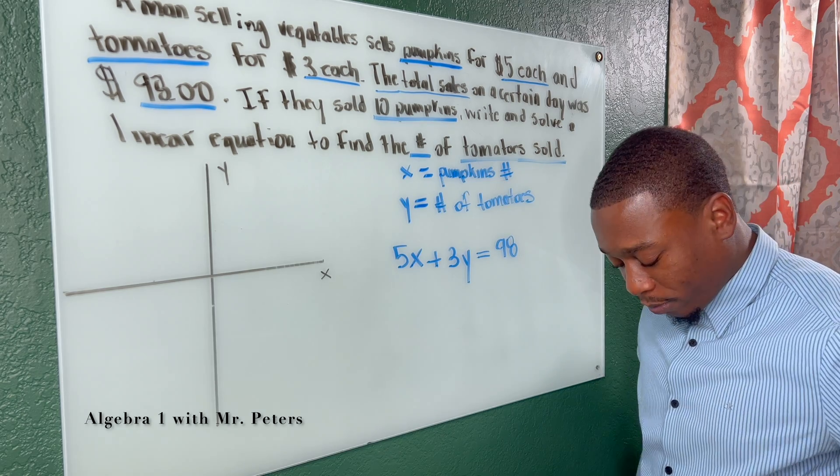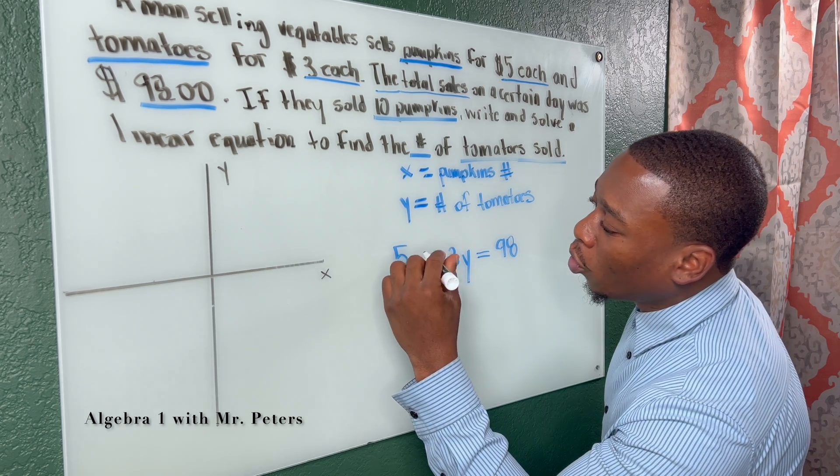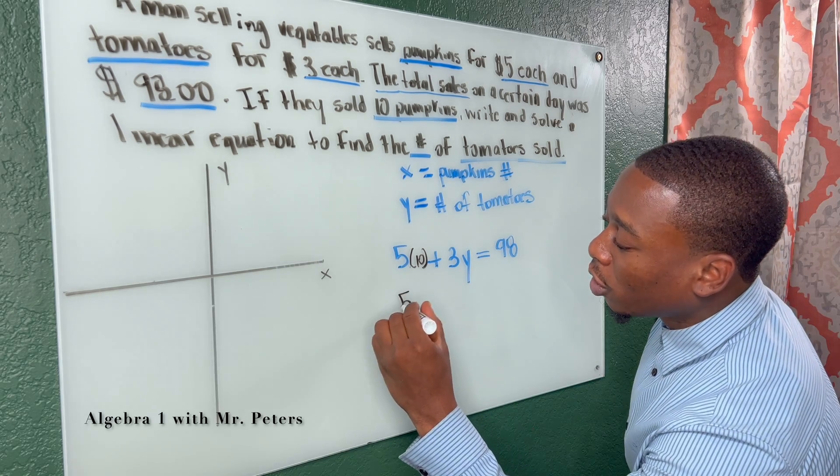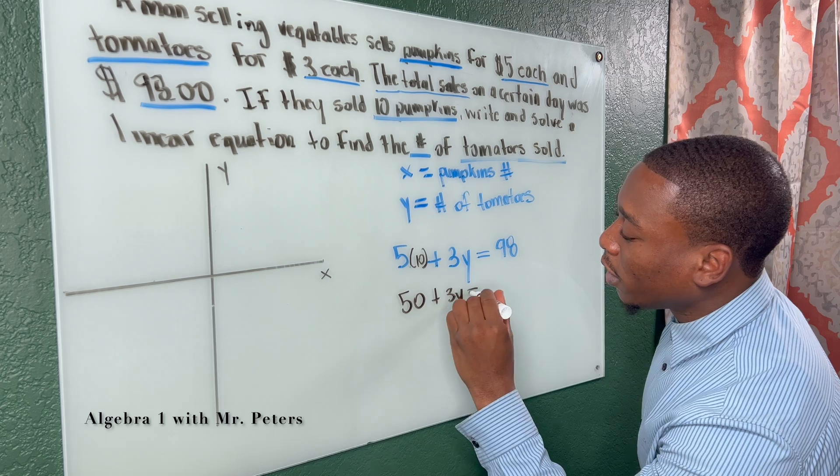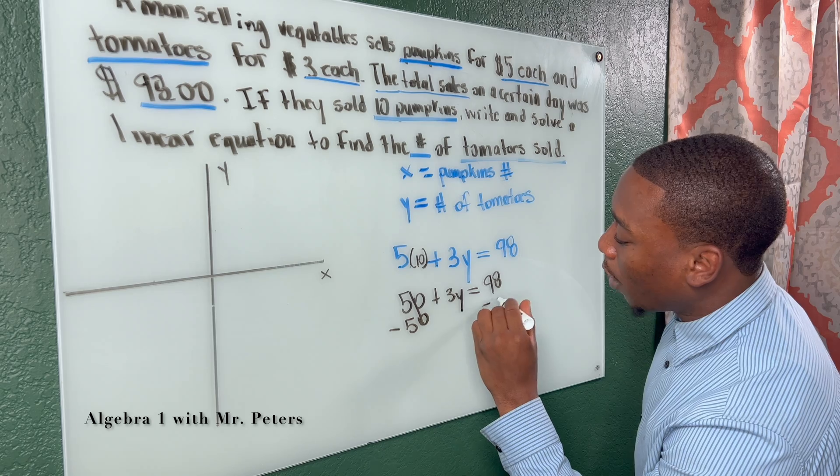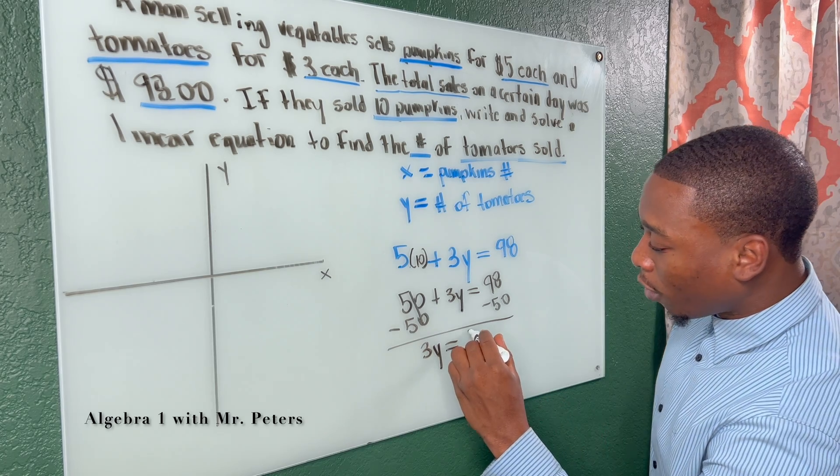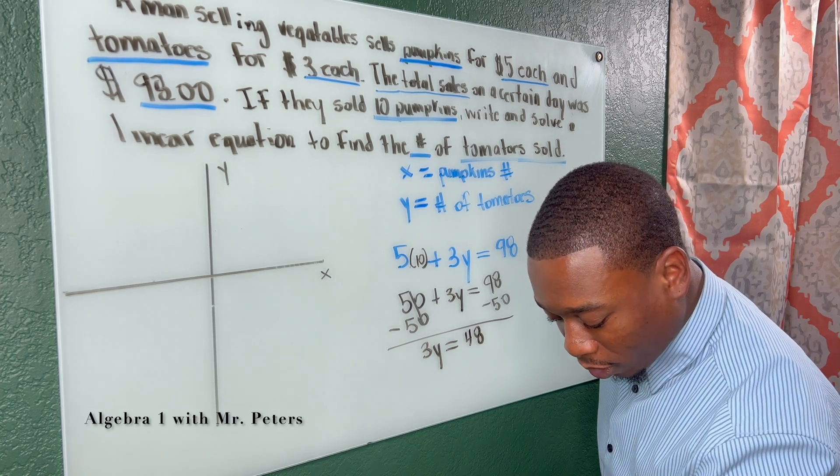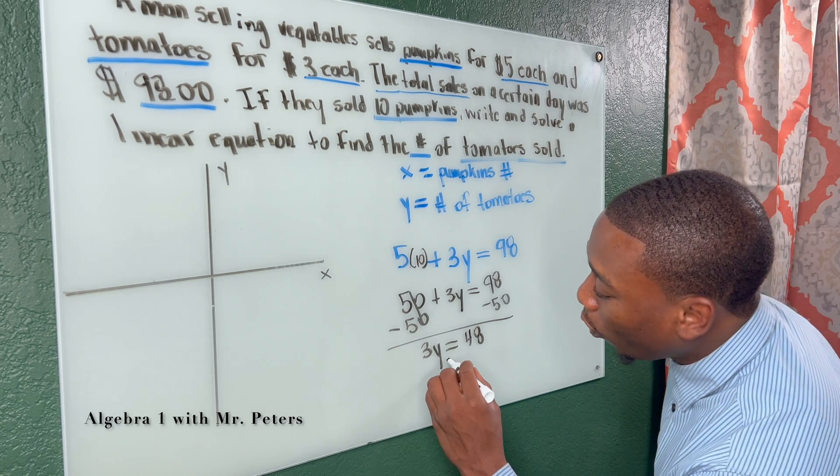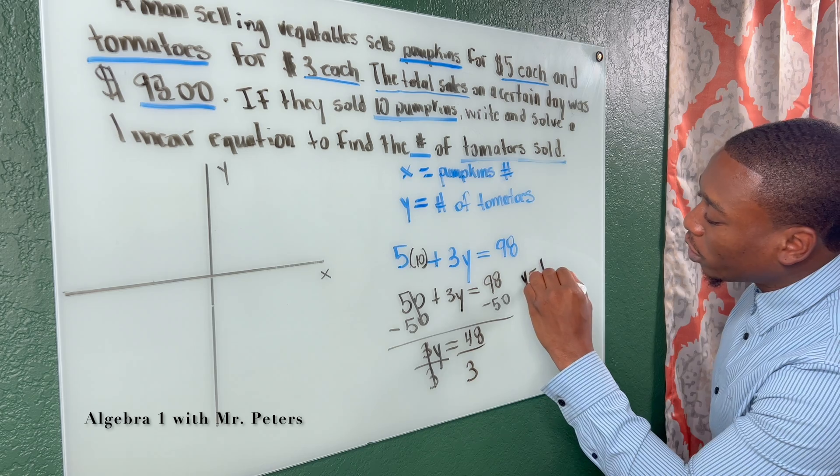So when we go to solve this, we're going to substitute. So now I'm going to substitute after creating my equation. We have 5 times 10 plus 3Y is equal to 98. So we have 50 plus 3Y is equal to 98. When I subtract 50, I'm left with 3Y is equal to 48. And let me just double check because I want to say the answer is 16. It is 16. Y, once we divide by 3, I'm going to get Y is equal to 16.